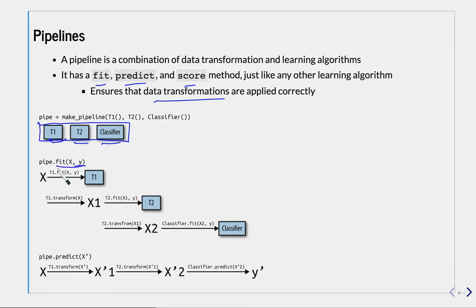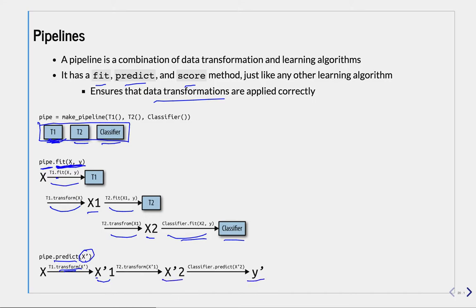If you call fit on a pipeline with some training data, it first fits the first transformer T and transforms the data to get X1. Then it fits the second transformer and transforms X1 into X2. Then on X2 it fits the classifier — so it didn't only fit the classifier, it also fit all the transformers. At predict time, given a test set, it only transforms the test data — not fitting anymore — applying each transformation in sequence, then applying the classifier. So this is correct, and pipelines make this very easy.